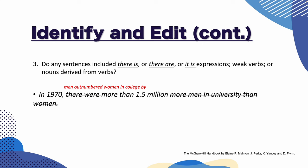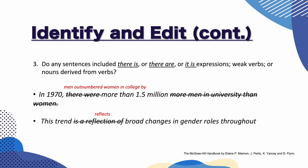Let's look at the second example: 'This trend is a reflection of broad changes in gender roles throughout North American societies.' You can see that 'is a reflection of' is unnecessary if you use the verb 'reflect.' So: 'This trend reflects broad changes in gender roles throughout North American societies.'